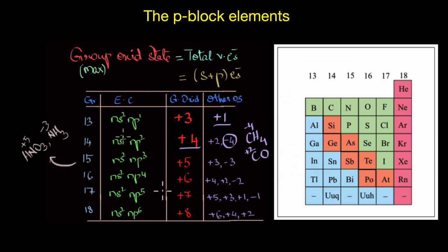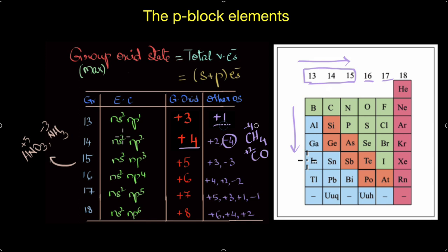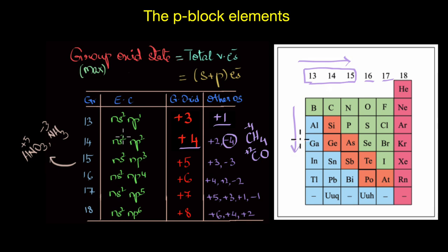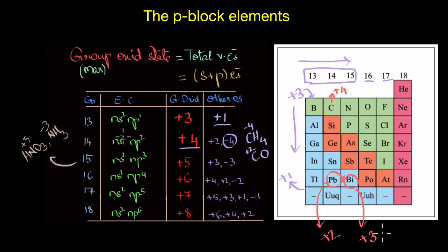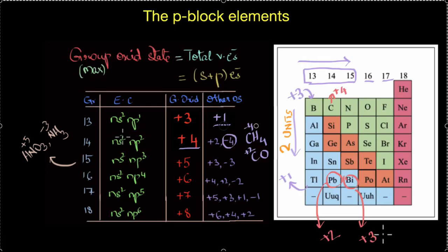Before wrapping up, there is something peculiar to note: the lighter elements in a group tend to show the group oxidation state, especially for groups 13, 14, and 15, whereas the heavier members become more stable in their lower oxidation state — that is, the oxidation state 2 units lower than the group oxidation state. For example, boron exists only in +3, but thallium is more stable in +1. Carbon, silicon, and germanium show +4, but lead is more stable in +2. In group 15, bismuth exclusively exists in +3 and not in the group oxidation state of +5.